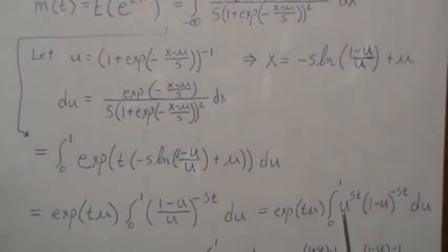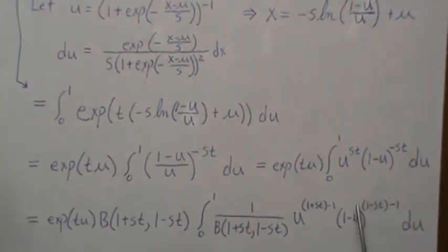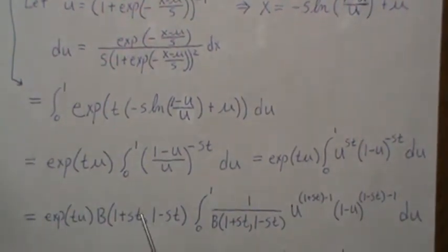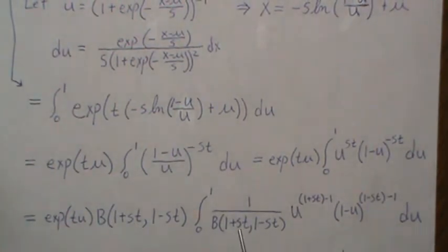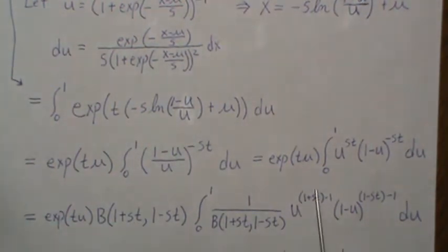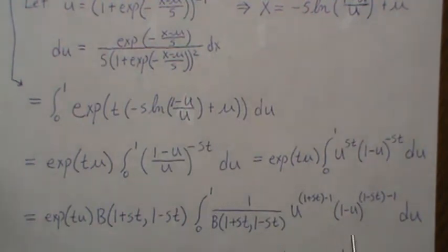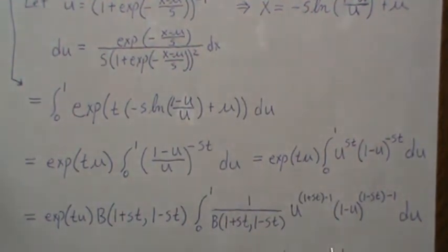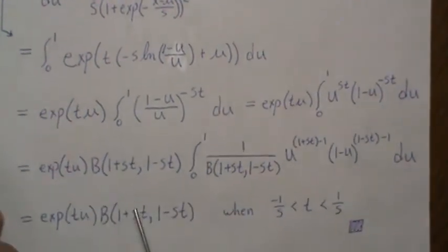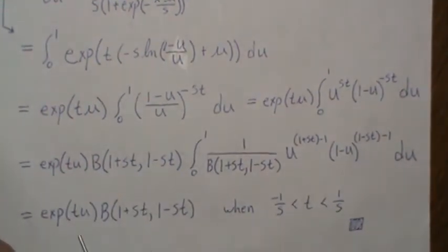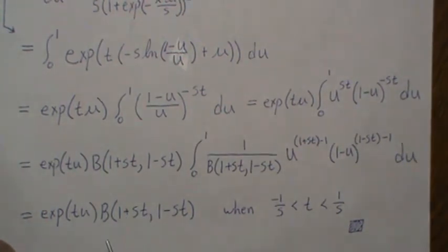What we're going to do is multiply this by a well-chosen 1, which is the beta function — multiply and divide by the same beta function. This then becomes integrating a beta distribution over its entire range, and since it's a density, this integral becomes 1. We're just left with this piece, and this is the moment-generating function.